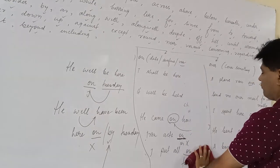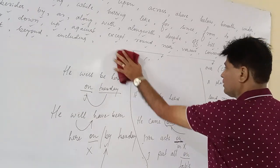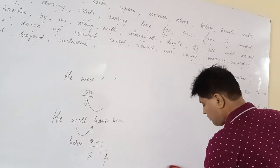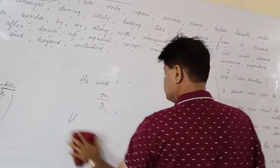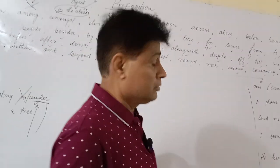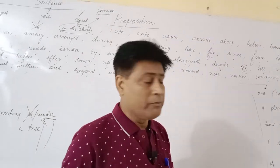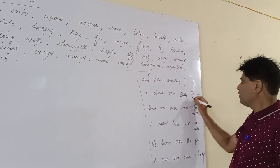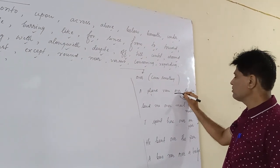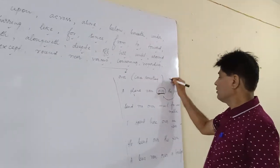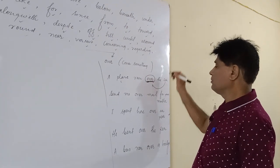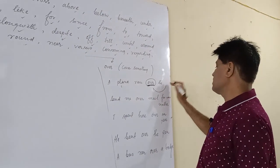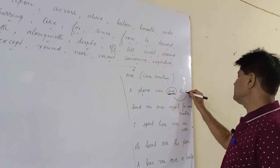At the time of learning the other one, the fourth one is over. Over preposition is used when you are covering something. A plane ran over the sea. Over sea is covering, that is why you are using over. A plane ran over the bridge.